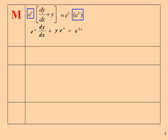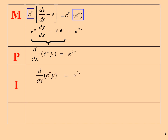Express the equation by using the product rule. Then integrate both sides. We get e to the power of x times y equal e to the power of 2x over 2 plus c.